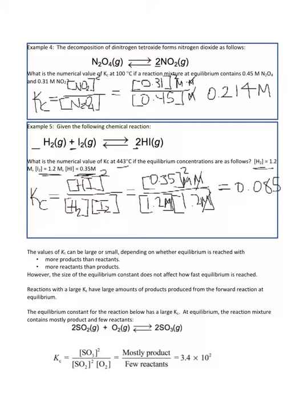The values of Kc can be either large or small, and it really depends on whether equilibrium is reached with more products than reactants or more reactants than products. The size of Kc tells you nothing about how fast you got to equilibrium. If you have a large Kc, you have a large amount of products. If you have a small Kc, you have a small amount of products.